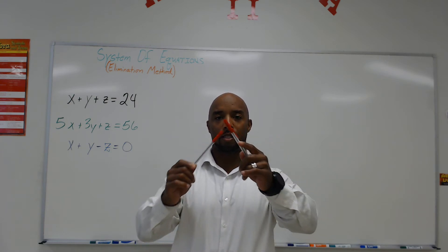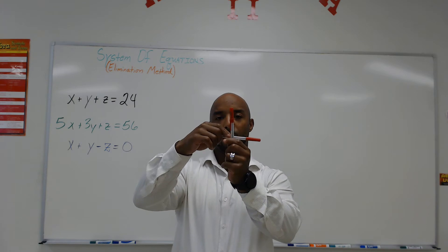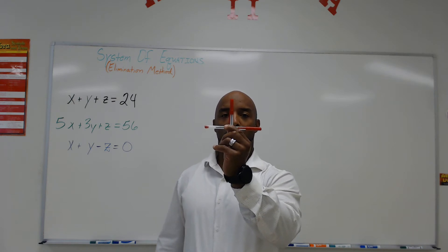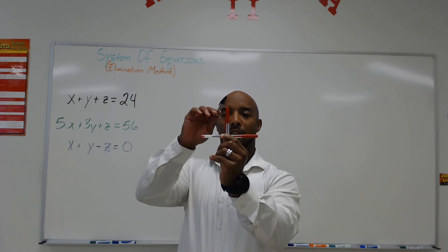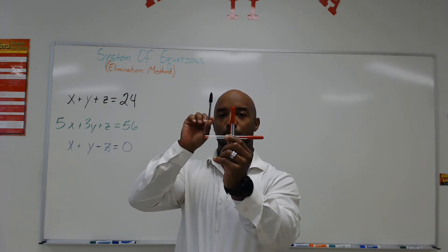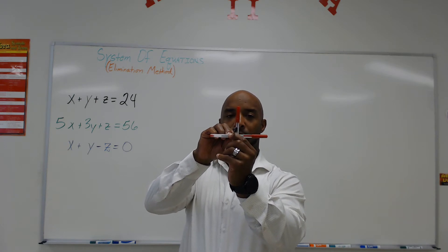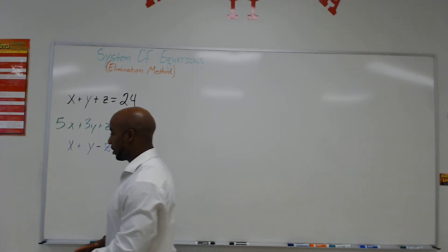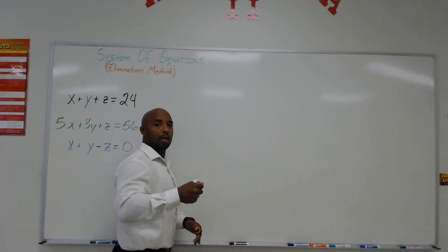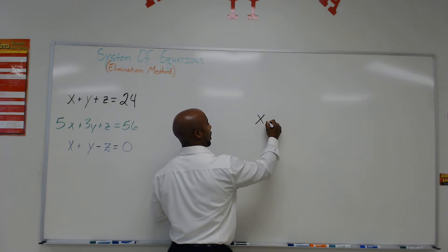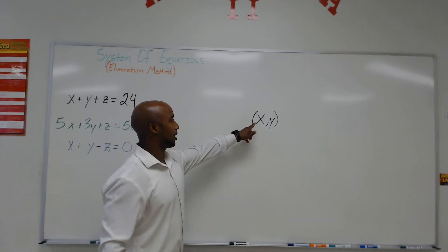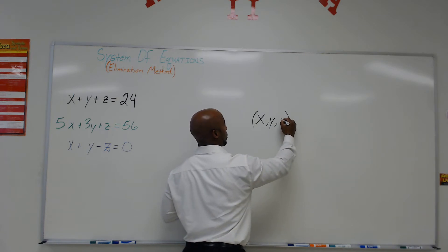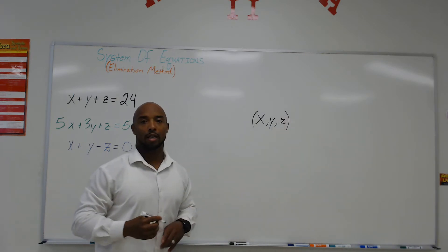Whenever you have lines that intersect, they intersect at a point. The intersection is at a point. Nowadays, what you're learning is that they're more than just two-dimensional — it's also three-dimensional. Here, where you have an x-axis, you can have a y-axis, and now you have a z-axis. All three of these axes all represent lines, and all three lines will intersect at a point.